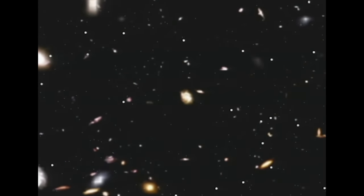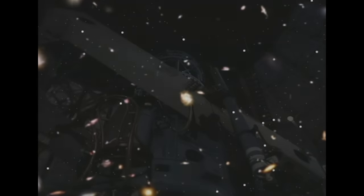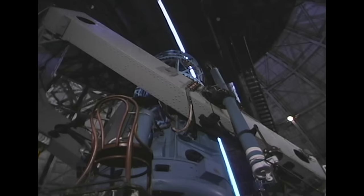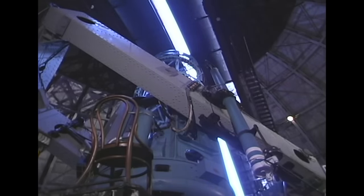When Hubble found that there were many galaxies, we saw that our galaxy was nothing distinguished at all, just one ordinary galaxy among billions. And that's the ultimate extension of the Copernican Principle.